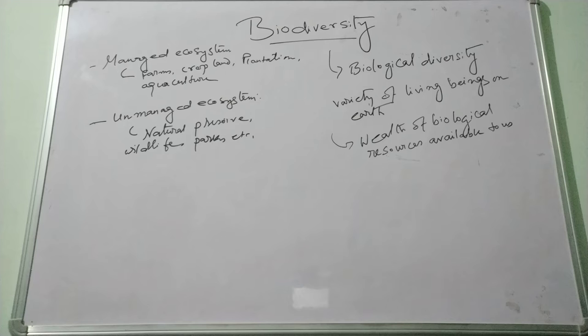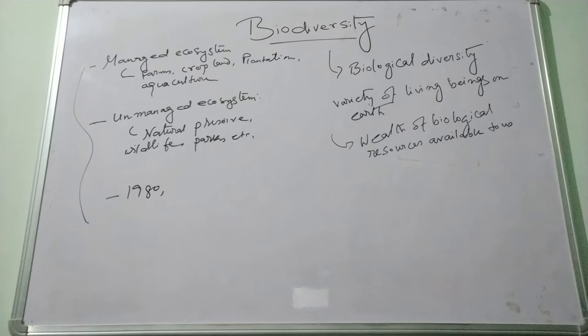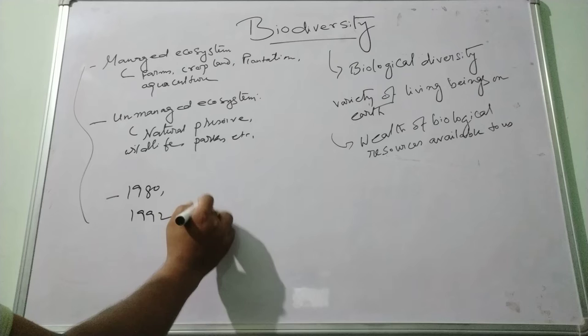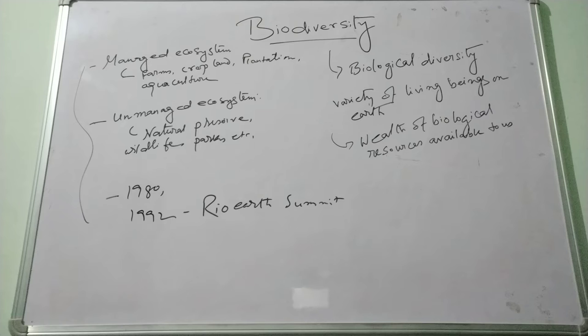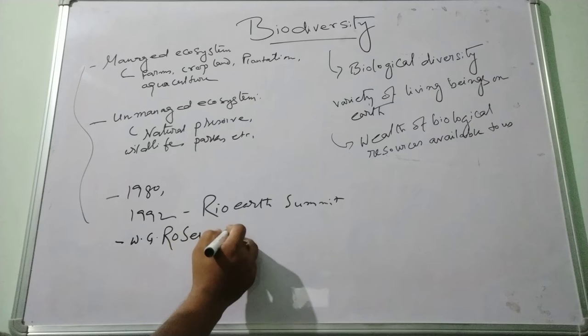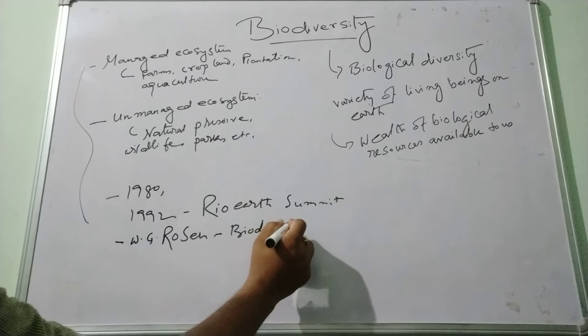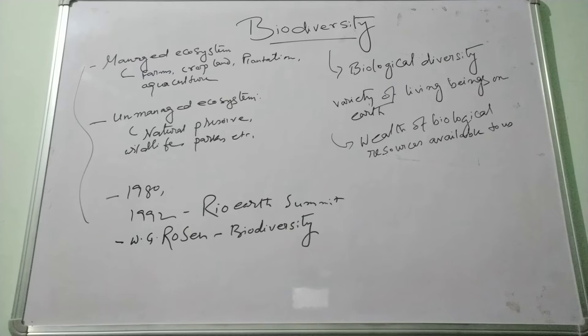This biological diversity began to be widely discussed during the period of 1980 to 1992, with interest elevated by publications such as the Rio Summit. The word biological diversity is attributed to W.G. Rosen in 1985.